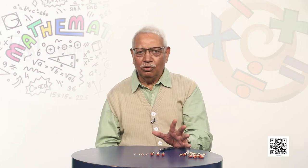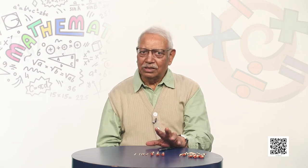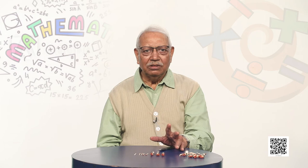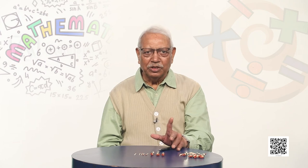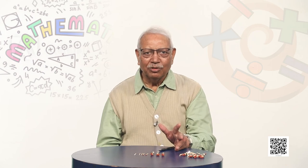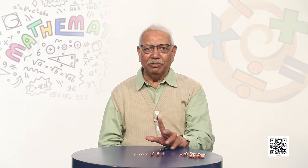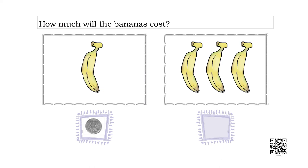We have learnt how to write numbers and answer the question how many. Now, if a banana costs 1 rupee, how much would 3 bananas cost? For 1 banana, 1 rupee; another banana, 1 rupee; another banana, 1 rupee — so we have 1, 2, 3 rupees. These 3 bananas will cost us 3 rupees.